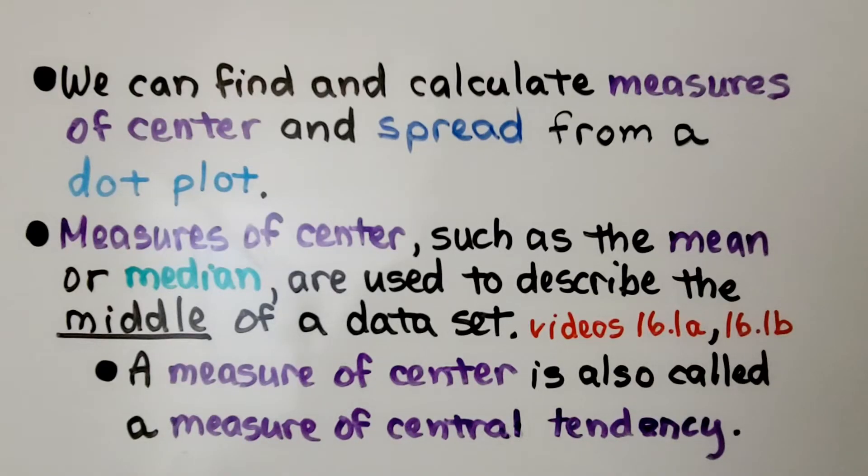We can find and calculate measures of center and spread from a dot plot. Measures of center, such as the mean or median, are used to describe the middle of a dataset. We covered that in videos 16.1a and 16.1b. A measure of center is also called a measure of central tendency. It is the measure of what tends to be the center.